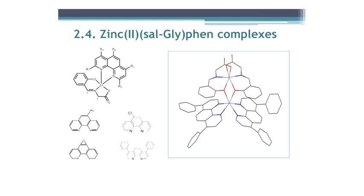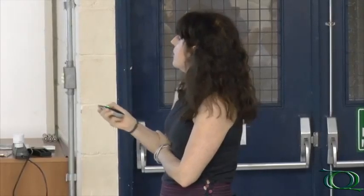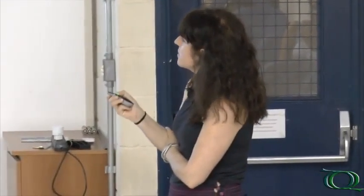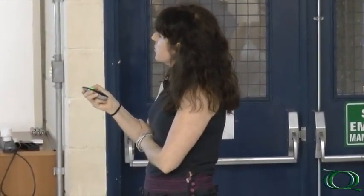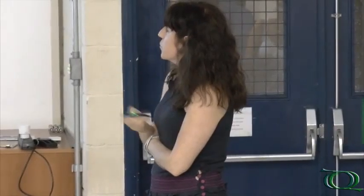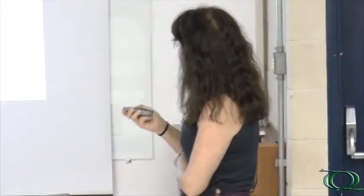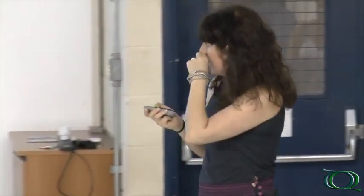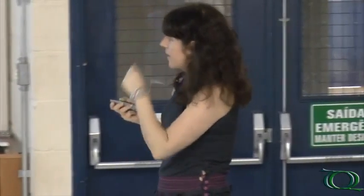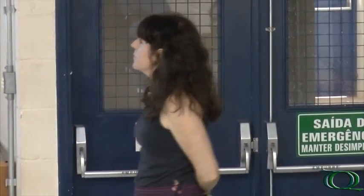We obtained a very unusual structure for one of the complexes with a bathophenanthroline ligand, in which we have two zinc atoms, two Schiff base ligands, and two phenanthrolines. One zinc is coordinated to two phenanthrolines and sharing two coordinations with two phenolates, while the other zinc is coordinated to two Schiff base molecules. We did some cytotoxicity studies to see if we should go ahead with these compounds.